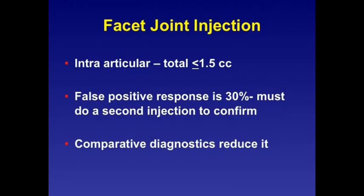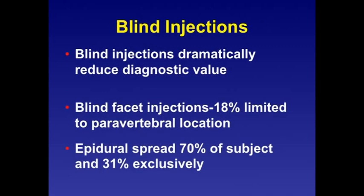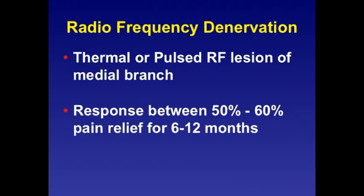Typically, what we do is perform medial branch blocks of the facet joints, which have a higher diagnostic value. Blind injections are not recommended. There is quite often epidural spread, estimated in 70% of subjects, and 30% exclusively. Once patients have a series of positive facet joint blocks, they may be good candidates for thermal or pulsed radiofrequency of the medial branch, which carries pain improvement of 50 to 60%, with duration of pain relief of about 6 months for pulsed and about 12 months for thermal. There is no need to do both.